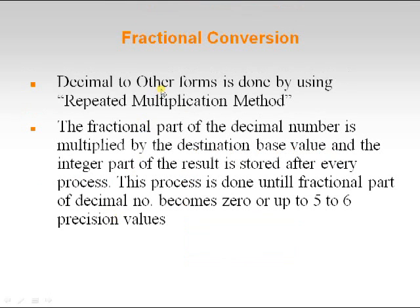Up to now we have seen how to convert integer values into other forms. Now let us see how to convert fractional values. Decimal to other forms is done using the repeated multiplication method. The fractional part of the decimal number is multiplied by the destination base value, and the integer part of the result is stored after every step. This process continues until the fractional part becomes zero or up to five to six precision values.